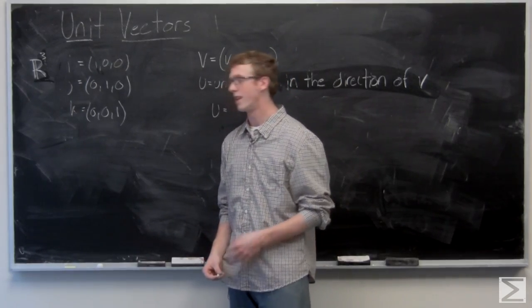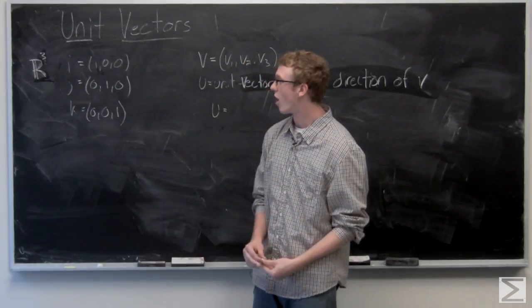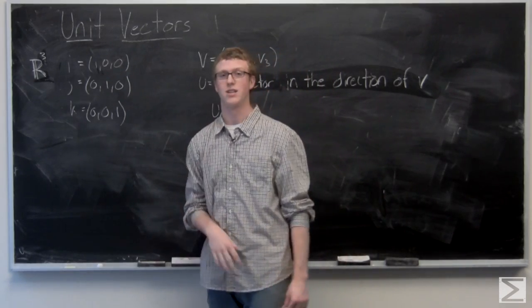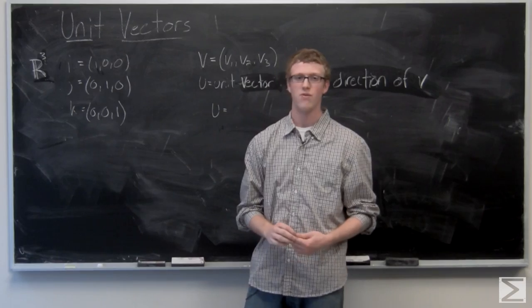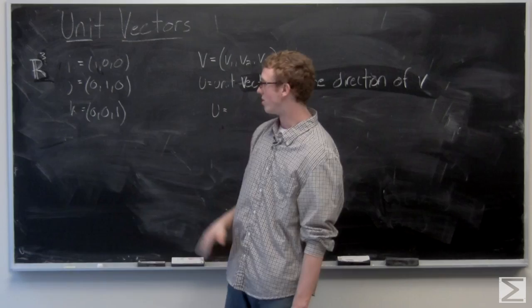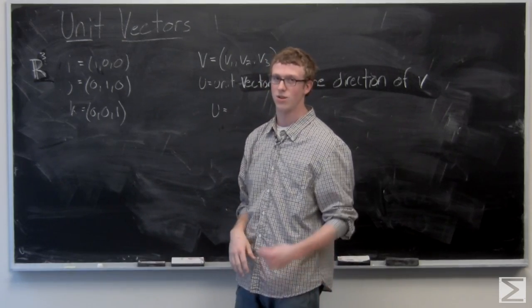A unit vector is a vector that has a length of one. You're always going to see in all sorts of math books the vectors i, j, and k. These are the three major unit vectors in three space. i is (1,0,0), j is (0,1,0), and k is (0,0,1).